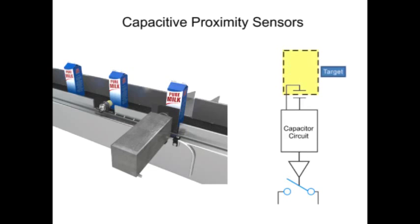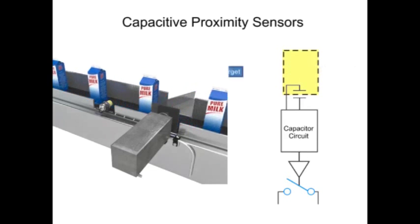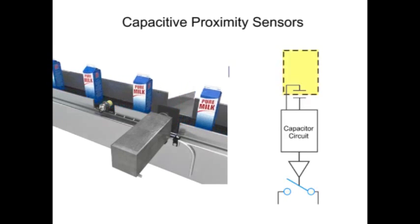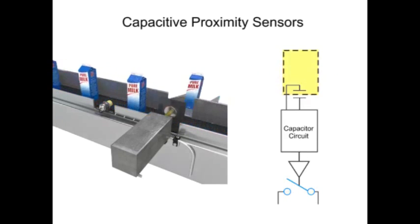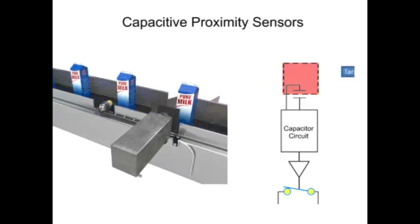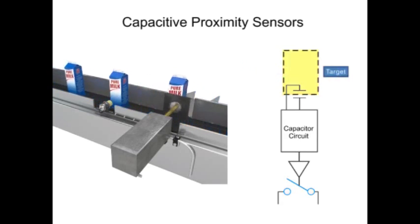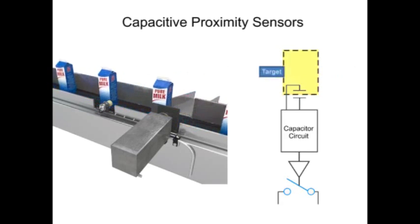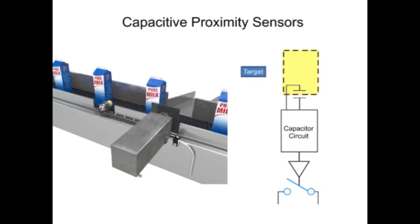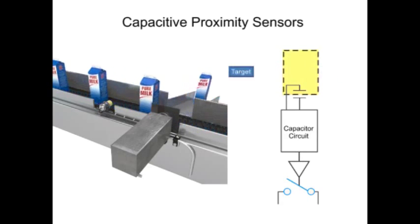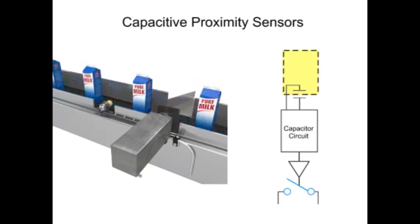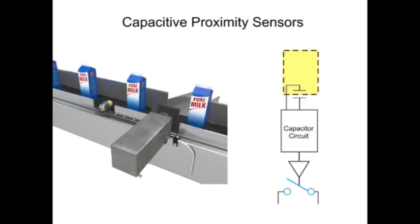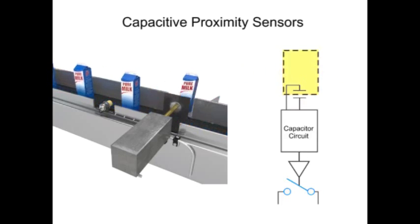In this example, if liquid is detected in the milk carton, the pusher device allows the milk to pass through. If no contents are detected, the pusher device rejects it and sends it to a different location.